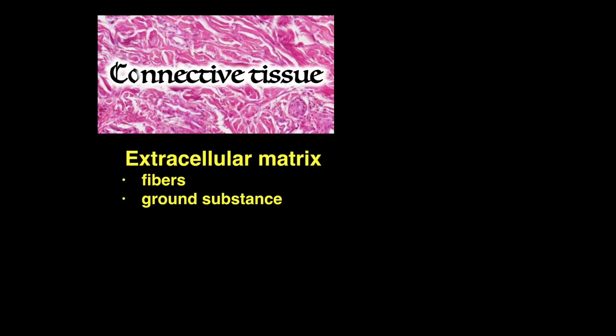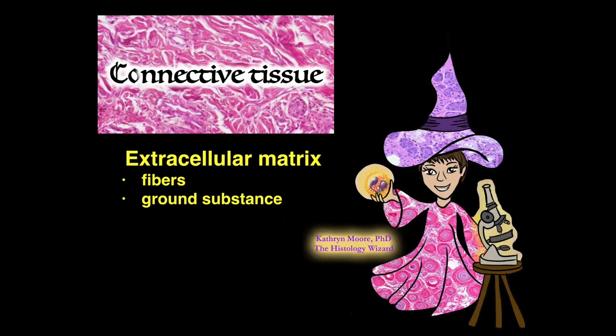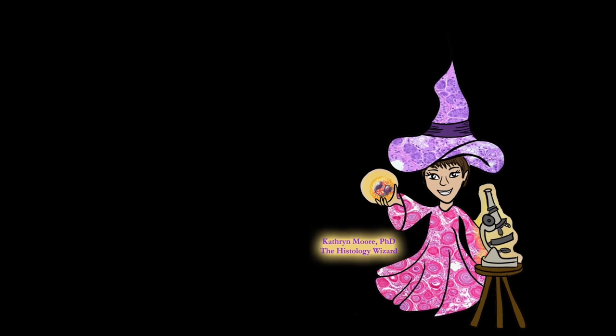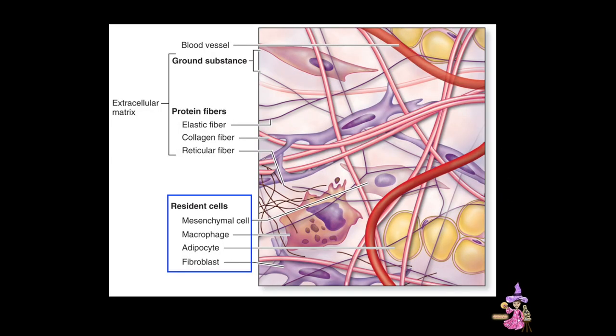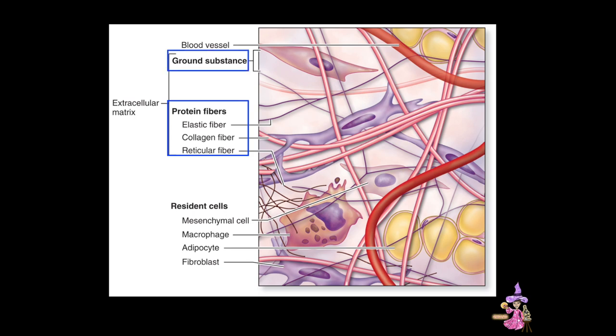Welcome to Connective Tissue Extracellular Matrix, Fibers, and Ground Substance. I'm Dr. Catherine Moore, the Histology Wizard. The three components that make up connective tissue proper are cells, fibers, and a hydrated gel-like ground substance. Today, we'll focus on the fibers and ground substance that comprise the extracellular matrix.